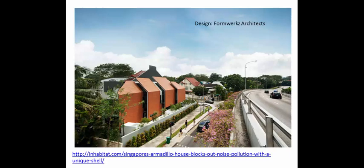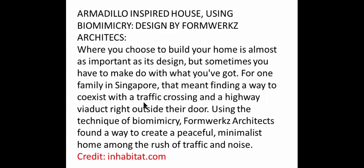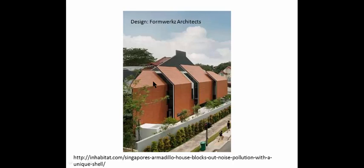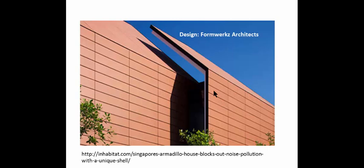We're going to look at an ingenious solution from Formberg's Architects who had a problem with sound. You can see the traffic on the right-hand side and at the bottom. Those panels would screen the building from sound and noise pollution. We'll look at the main entrance of the building, which looks like the head of an armadillo - that's the slant. A close-up shows the panels again, with a great idea to include some glass windows to get more light into the building.